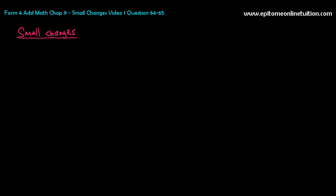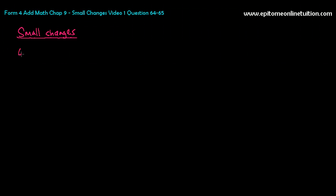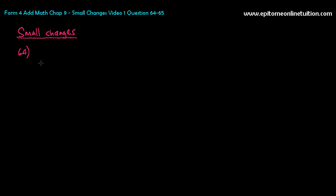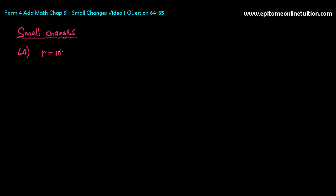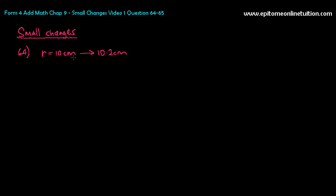Basically, small changes means you are going to find a change. Let's use question number 64 to illustrate small changes and approximations. Question 64 says the radius of a circle increases from 10 cm to 10.2 cm. When you see this, there's an increase, and notice they did not say 'increases at a rate of something.' So this is not rate of change.